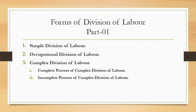Complex division of labor is further classified into two parts. Number one: Complete process of complex division of labor — under this system the total work is divided into parts and sub-parts, and the product of each part is able to yield a commodity in complete form. For example, the job done in a cotton mill where spinning, weaving, sizing, bleaching, dyeing, calendaring, etc., are done by different processes and different workers so that completely finished cloth is made for use.